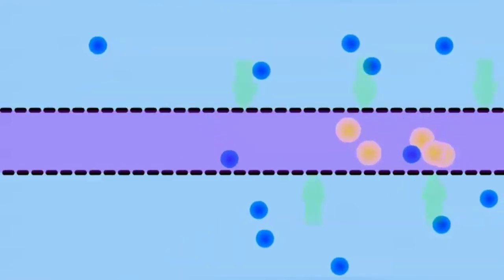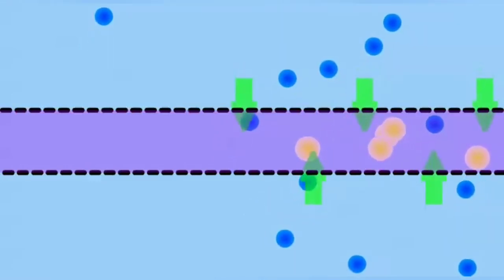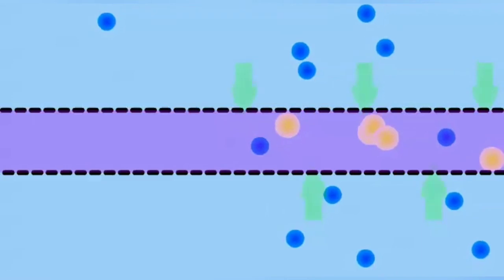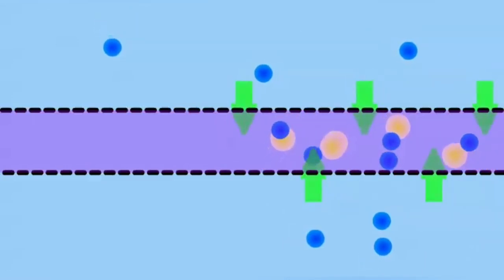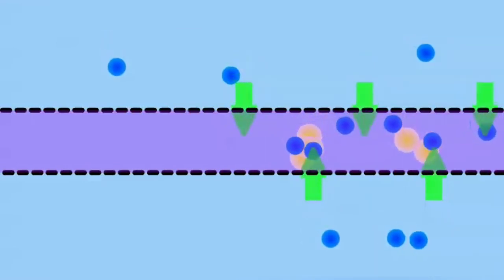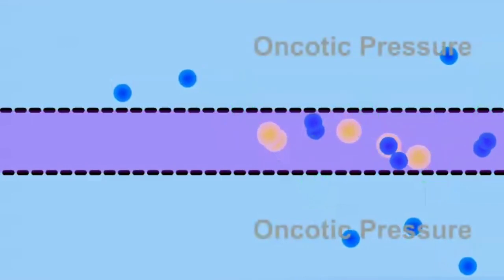This means that in effect these proteins pull water into that compartment as the force of osmosis tries to equalize the amount of water in blood and in the interstitial fluid. This pulling power is called oncotic pressure.